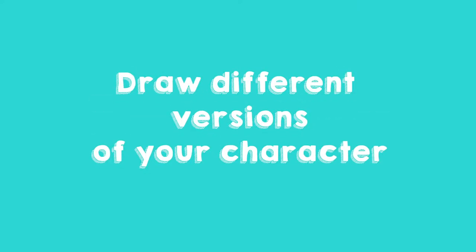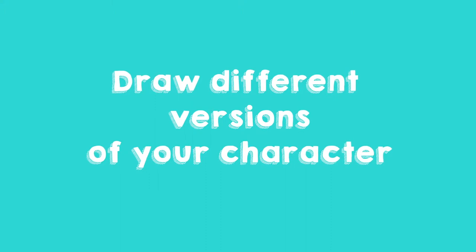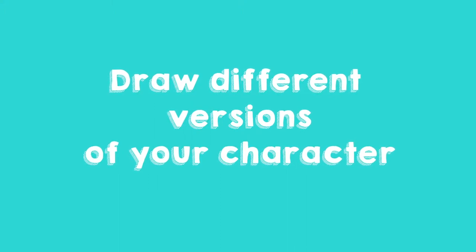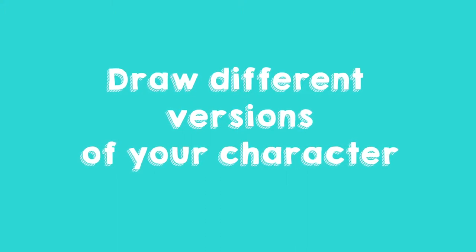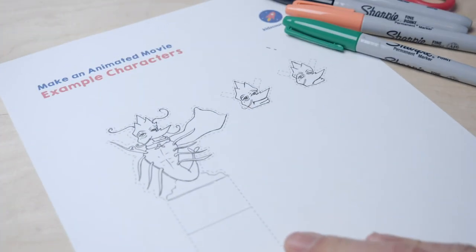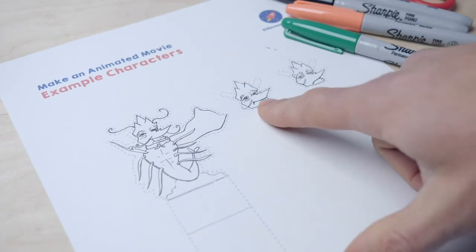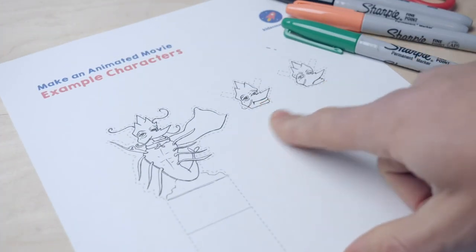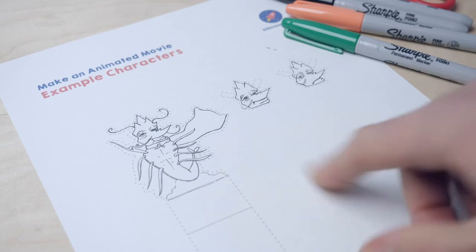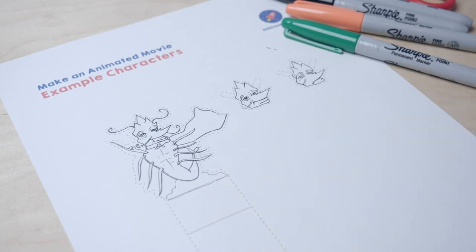Tip: of course you may also draw different versions of your characters. If a character is happy in the first scene and scared in the next scene, then you can draw your character multiple times, or you use a mask. On this cutting sheet you see an example that I have used for our animation. Good luck!